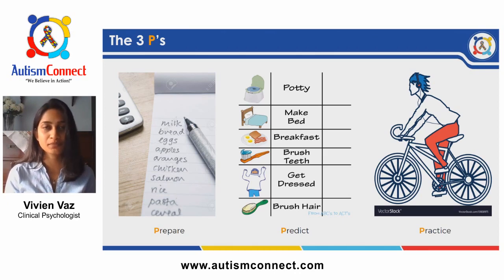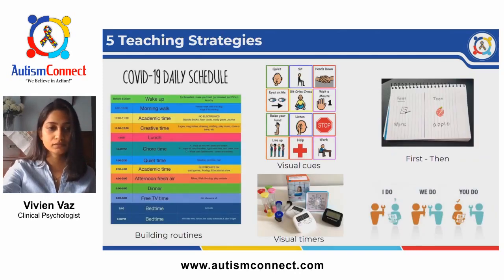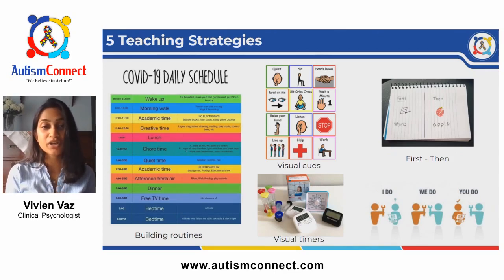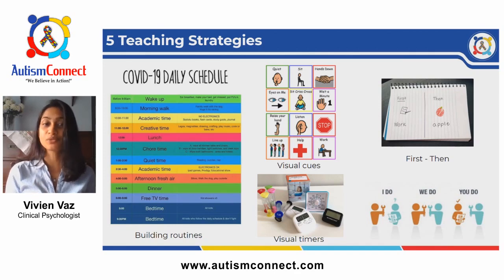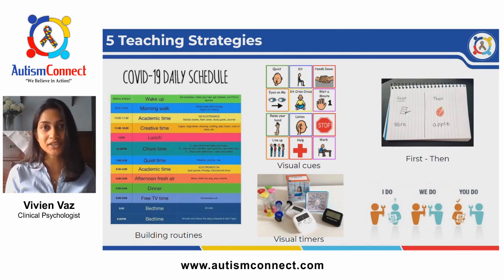This is the same for children with autism — the only difference is how we communicate the three P's to them. Let's discuss a few strategies you can use to help your child understand and learn better. Today I will be addressing: building a routine, using visual cues, using aids such as timers, the first-and-then strategy, the I Do We Do You Do technique, and a little bit about sensory needs.